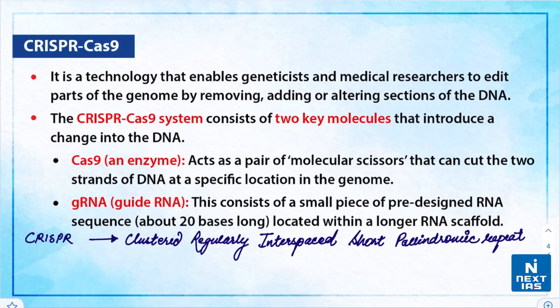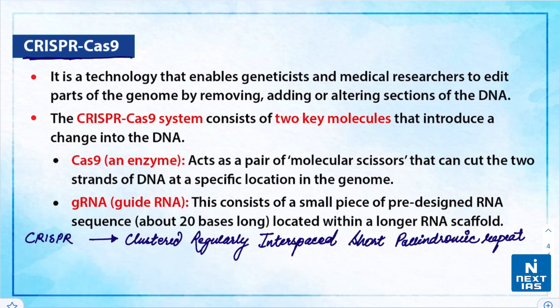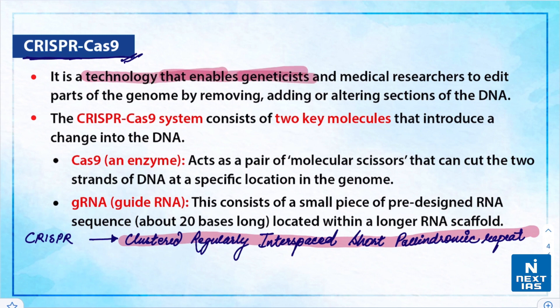There are many approaches to gene editing, and one among them is CRISPR Cas9. CRISPR stands for Clustered Regularly Interspaced Short Palindromic Repeats, and Cas9 is a protein enzyme that helps to edit the gene. CRISPR Cas9 is a technology that enables geneticists and medical researchers to edit parts of the genome by removing, adding, or altering sections of the DNA.